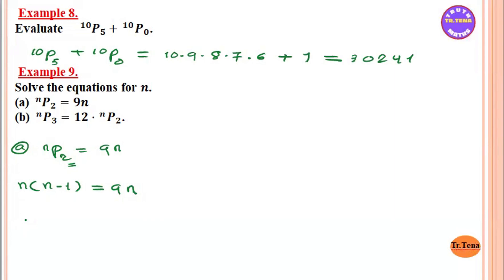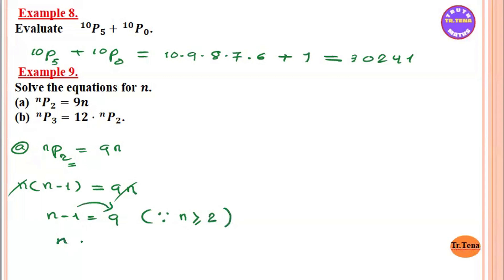NP2 equals n(n-1) equals 9n. So n squared minus n equals 9n. Therefore n minus 1 equals 9, which gives n equals 10. Since n must be greater than or equal to r, n equals 10.